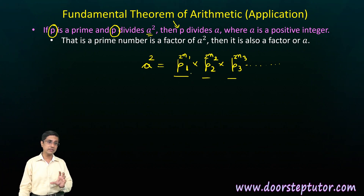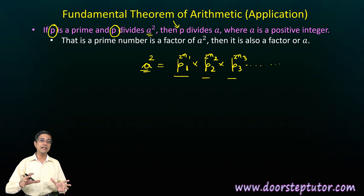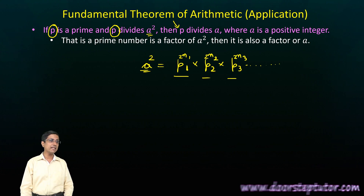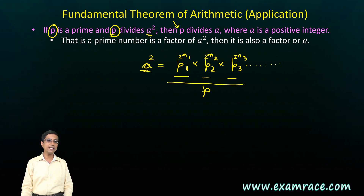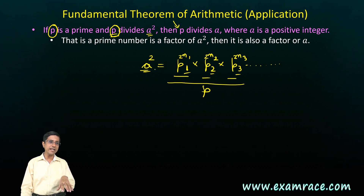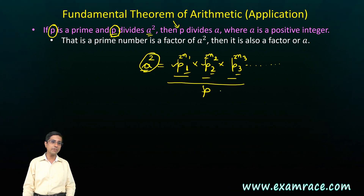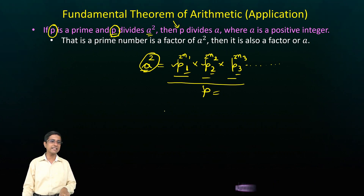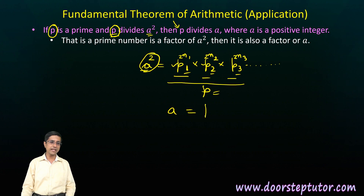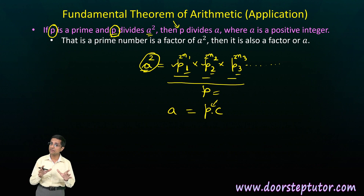The quantity of prime factors might change, but no new prime factors can be created. If a prime factor is missing in A, it cannot suddenly appear in A squared. So if prime P divides A squared, it means P exists among the prime factors P1, P2, P3 of A squared — which means P must already exist as a factor of A. Therefore, we can write A as P times C, factoring out P. This is what this theorem states — a very powerful result.